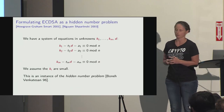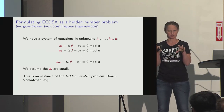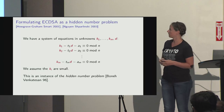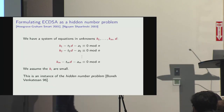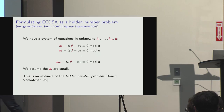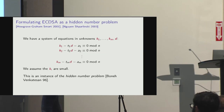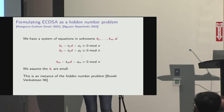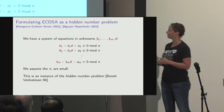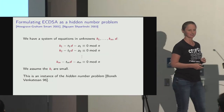This is the hidden number problem, already mentioned earlier this morning. We have a system of linear equations with unknowns in the signature nonces and the secret key D. This is an alternative formulation of the hidden number problem originally described by Boneh and Venkatesan in the context of breaking Diffie-Hellman with bits known.